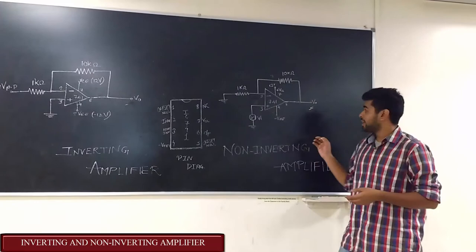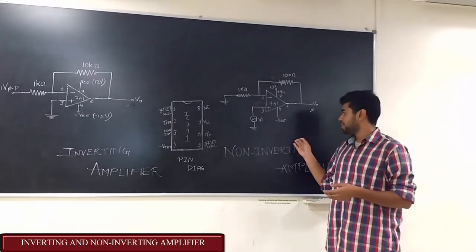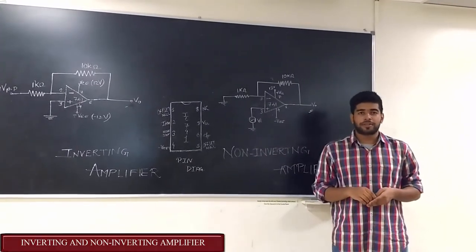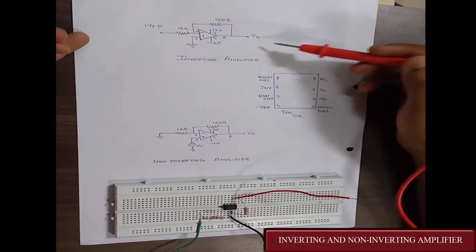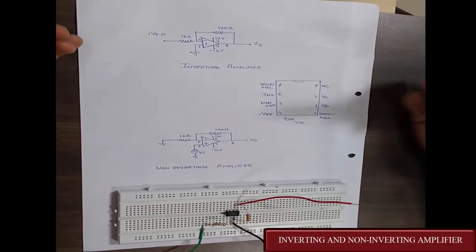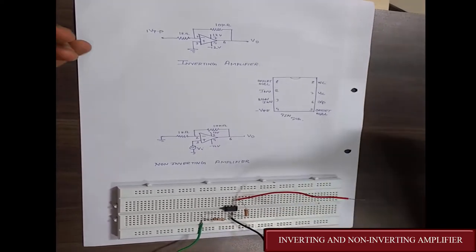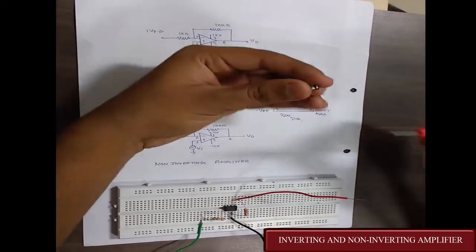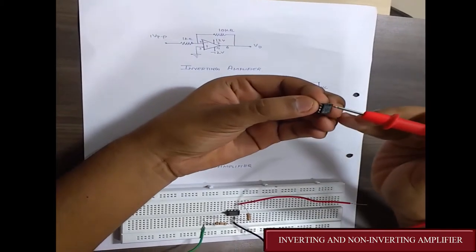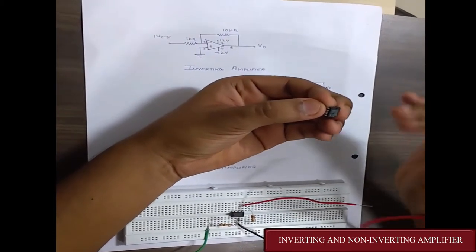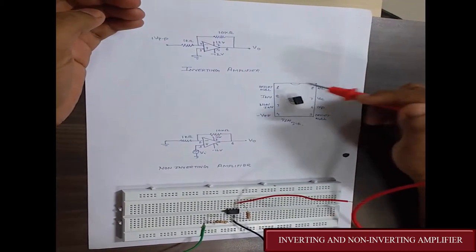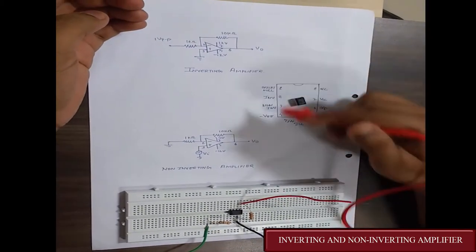So that was the circuit diagram of the inverting amplifier and non-inverting amplifier. Now let us implement the circuit. This is how the inverting amplifier is implemented on the breadboard. The device used is IC741 — here is the IC741. You can see the notch here, and these are the corresponding pins and their uses.